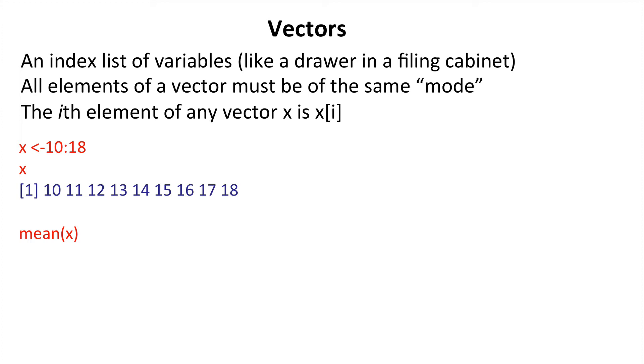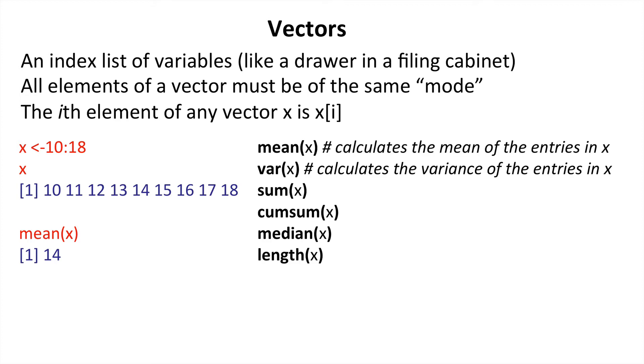What's the mean of those series of numbers? Well, we can call up tailor-made functions within R to ask that and simply say mean x. And we see the mean there is 14. Here are a variety of these tailor-made functions which are all default within R. We have mean, we have the variance, the sum, cumulative sum, median, and even length, in terms of the number of elements in that vector.